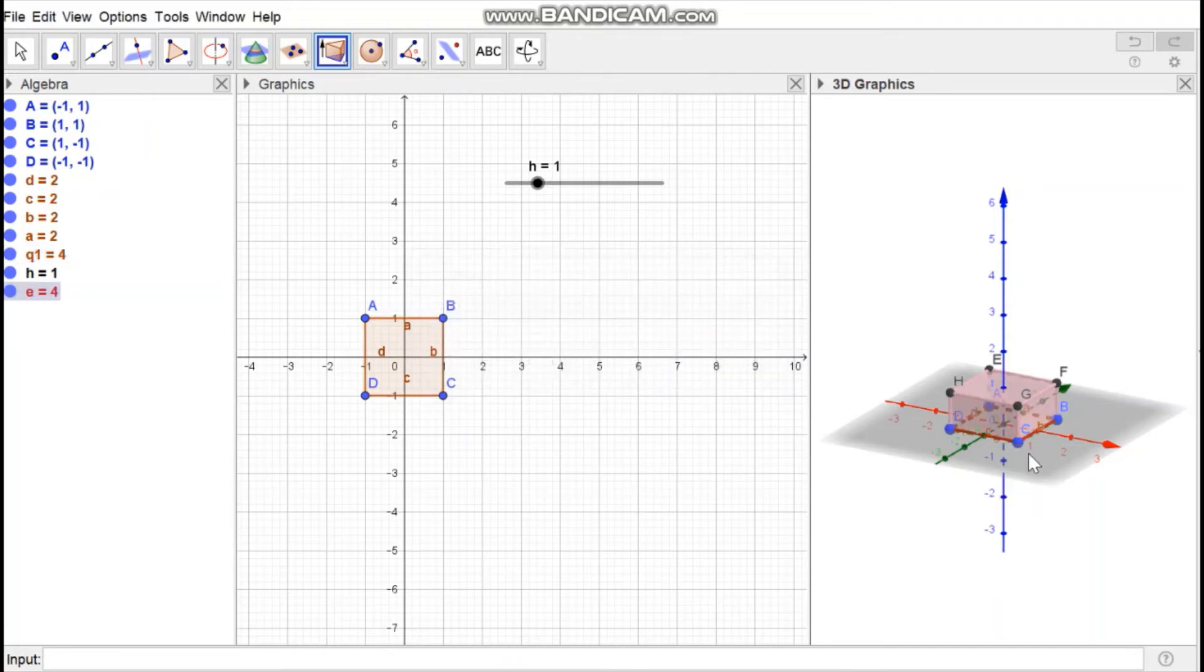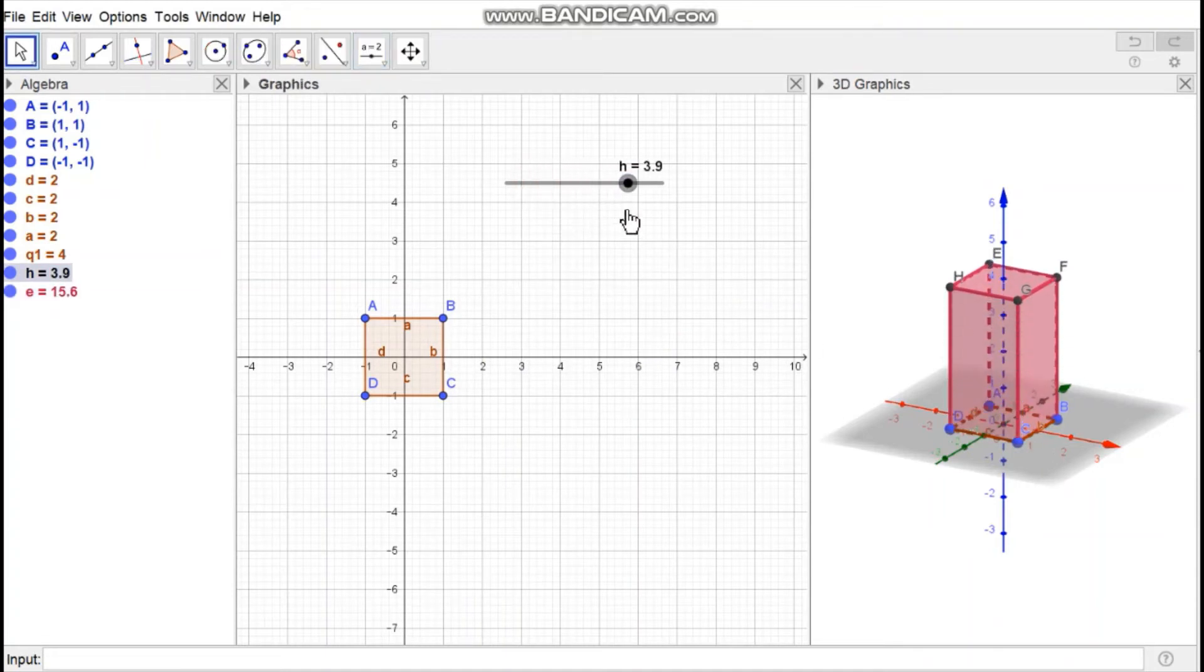Then a cuboid is generated with height h. To create the net, select 3D Graphics.